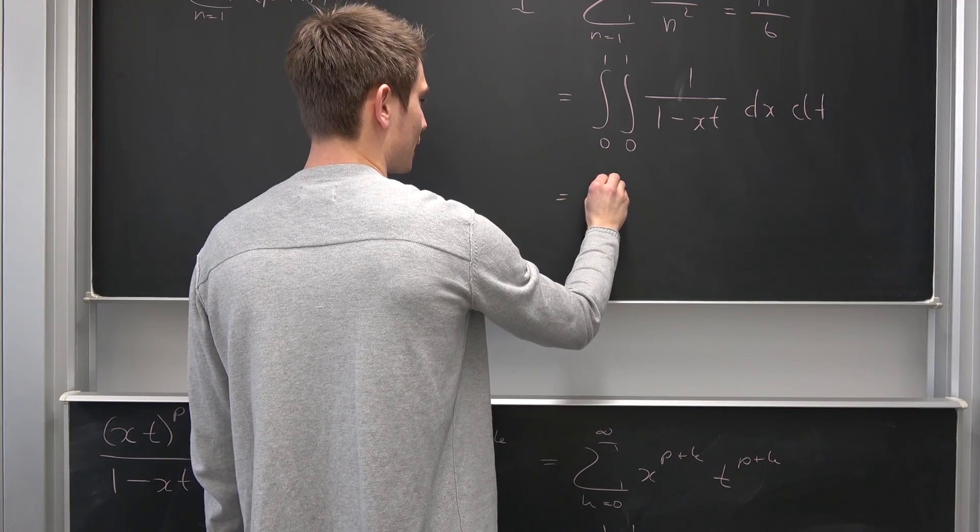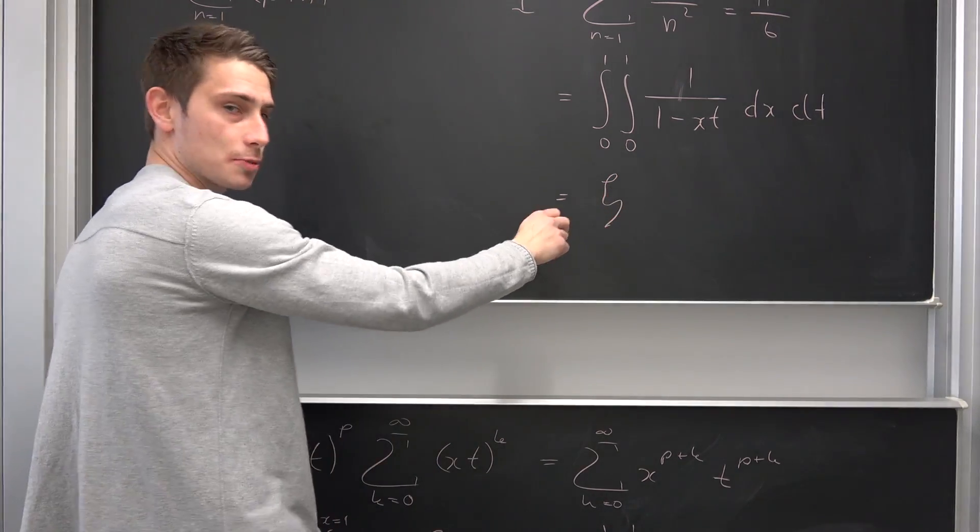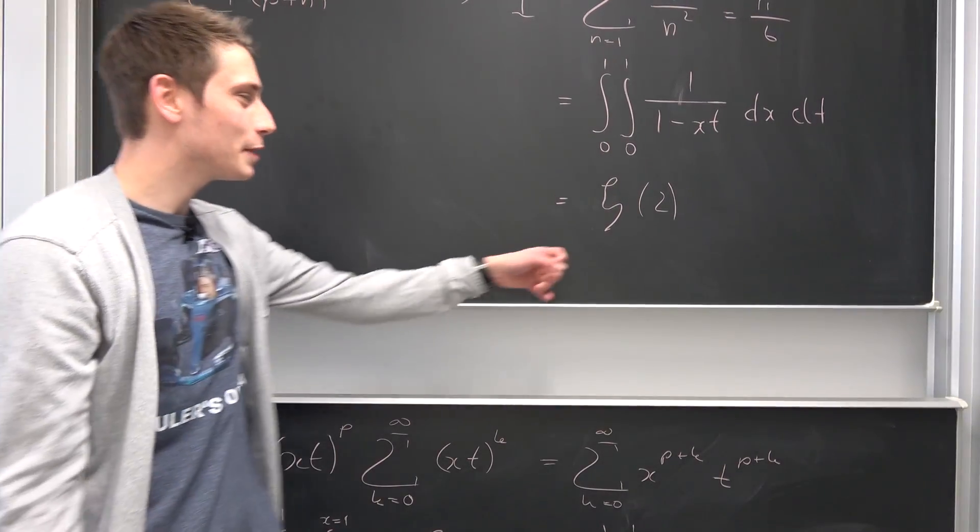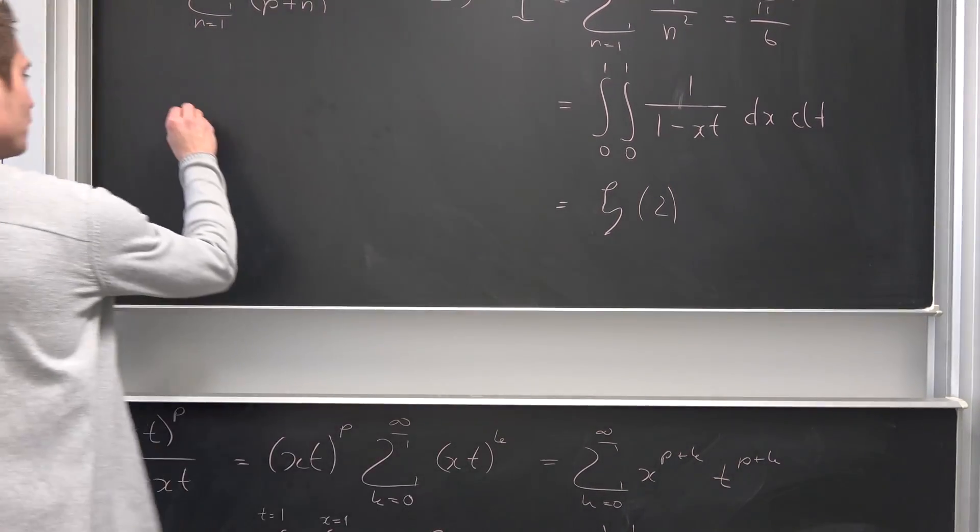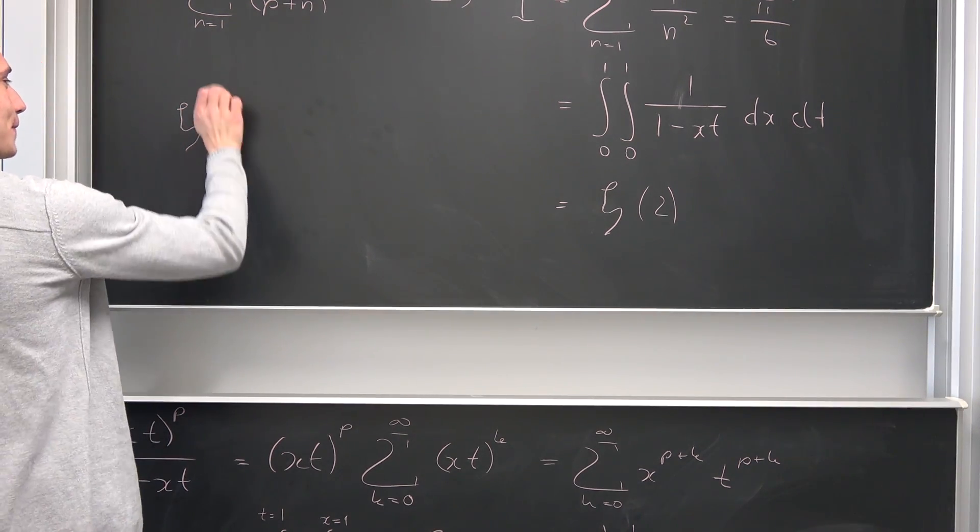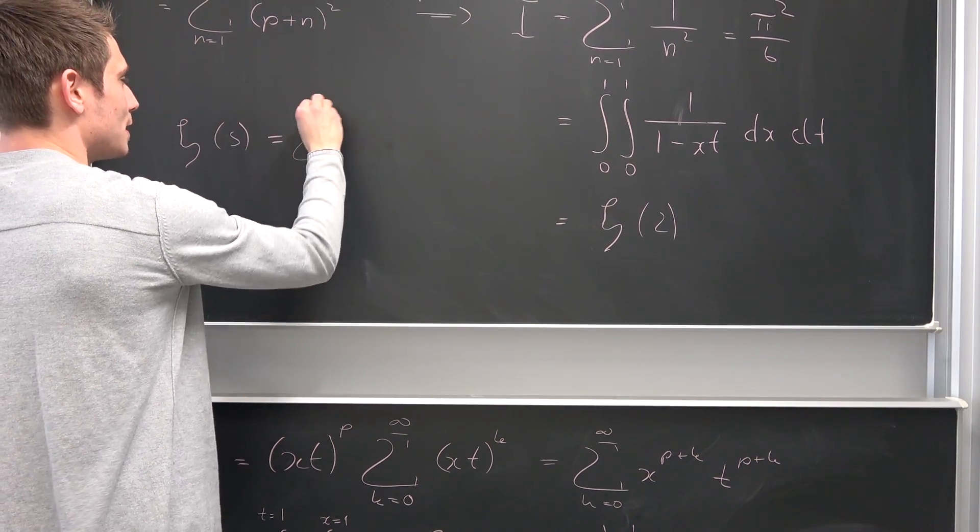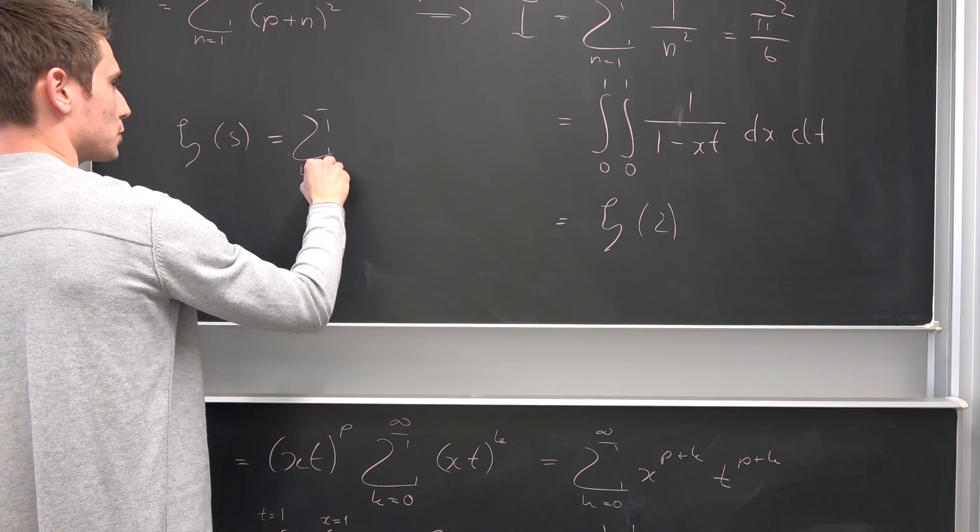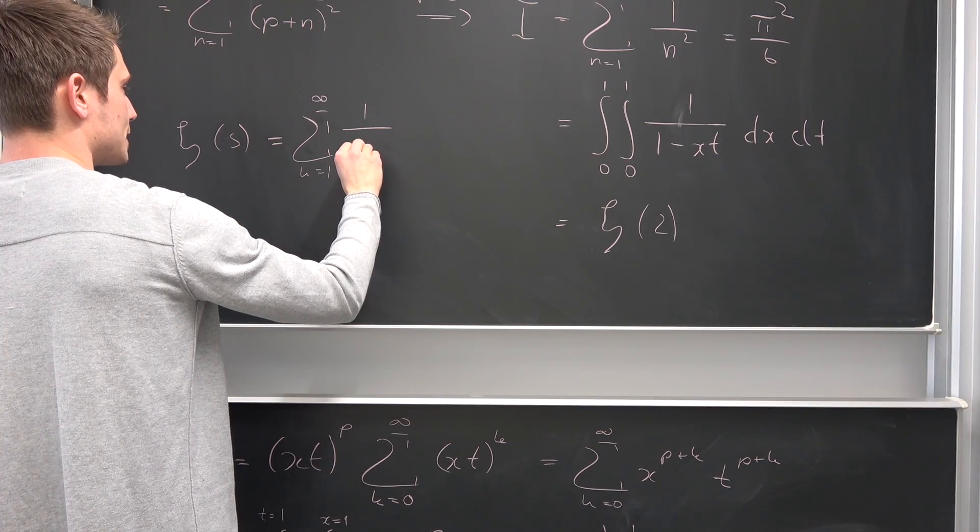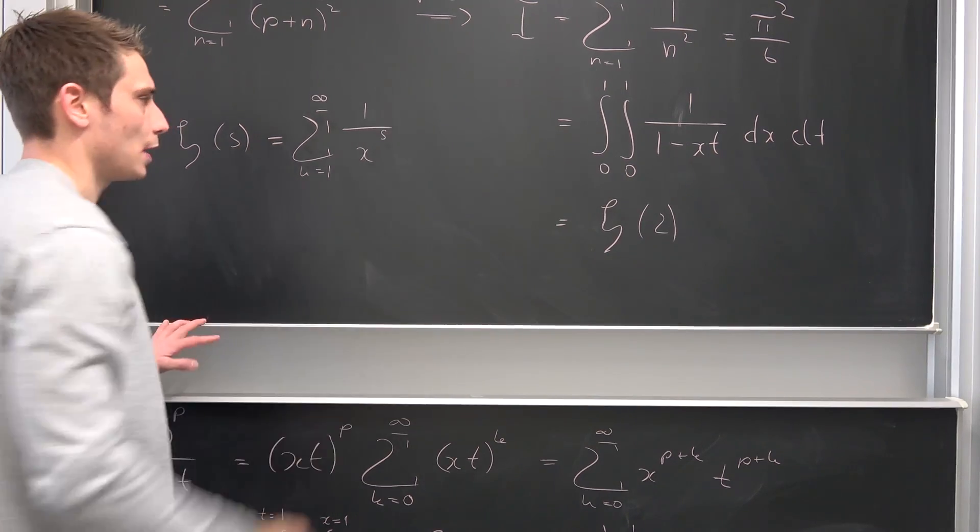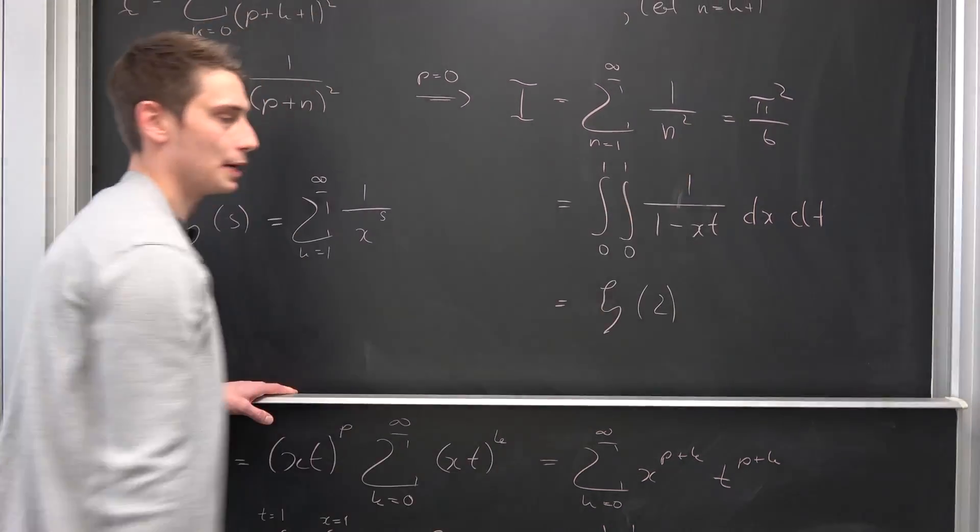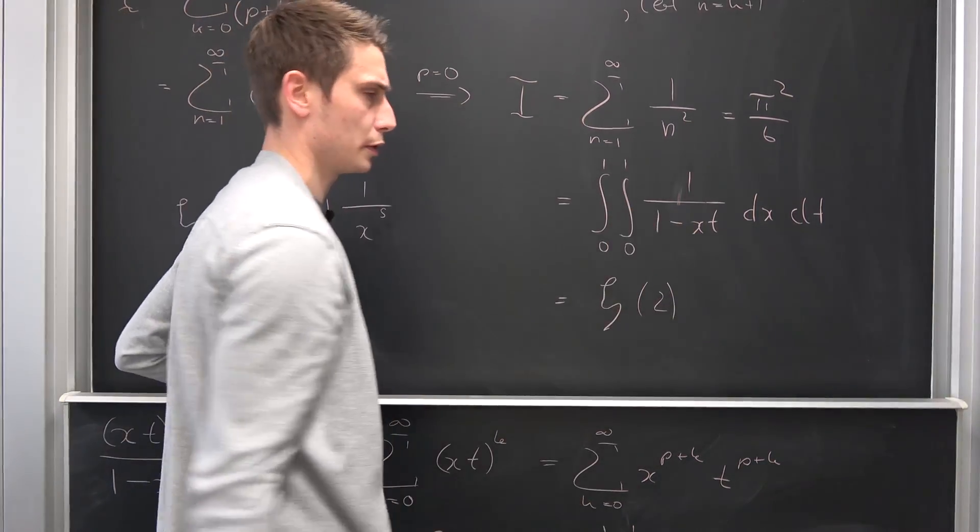This thing right here is actually equal to—I fucking hate this—that's supposed to be a zeta of 2. That's the Riemann zeta function where zeta of s is nothing but the sum running from k equals 1 to infinity of 1 over k to the s power. This is our Riemann zeta function and zeta of 2 is nothing but our Basel problem with this integral representation.